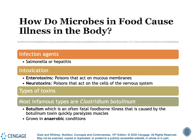Microorganisms can cause foodborne illness either by infection or intoxication. Infectious agents — an example would be salmonella or hepatitis viruses — are the ones that infect the tissues of the human body and multiply there and cause illness. Some bacteria produce toxins, and they can be enterotoxins or neurotoxins, which are poisonous chemicals that react as those bacteria multiply. Enterotoxins act on the mucous membranes, primarily your gastrointestinal tract, and neurotoxins are poisons that act on the cells of your nervous system.